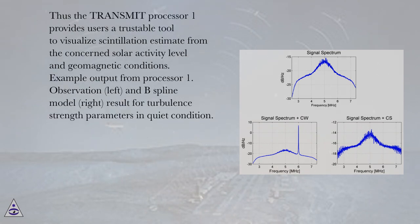Thus the TRANSMIT processor 1 provides users a trustable tool to visualize scintillation estimates from the concerned solar activity level and geomagnetic conditions. Example output from processor 1: